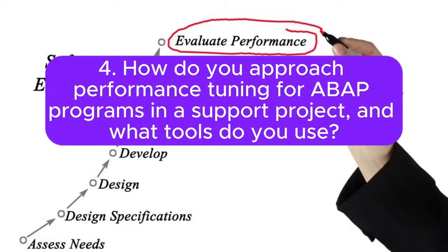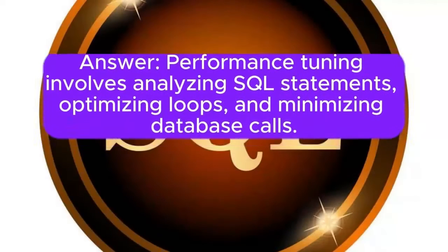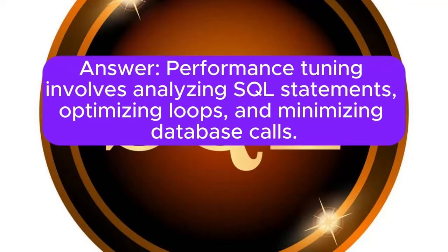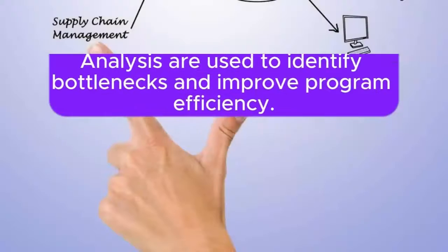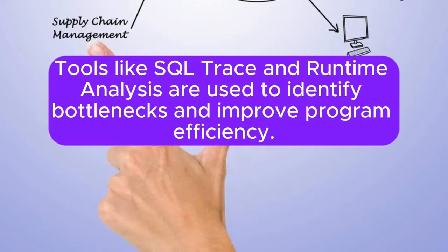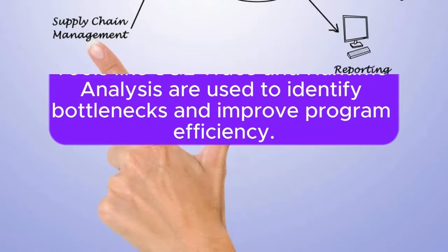Question 4: How do you approach performance tuning for ABAP programs in a support project, and what tools do you use? Answer: Performance tuning involves analyzing SQL statements, optimizing loops, and minimizing database calls. Tools like SQL Trace and runtime analysis are used to identify bottlenecks and improve program efficiency.